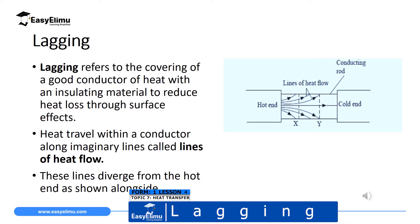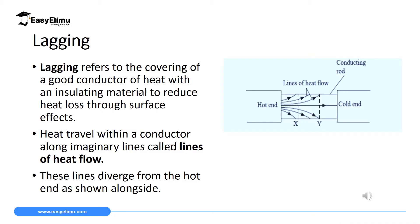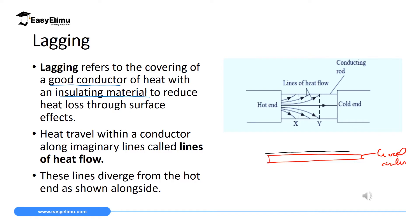Now, what is lagging? Lagging refers to the covering of good conductors. We are going to cover good conductors of heat with an insulating material to reduce heat loss through the surface of the conductor. So in this case, we are going to have a material which is a good conductor, and then we are going to use a poor conductor on the surface of this good conductor.